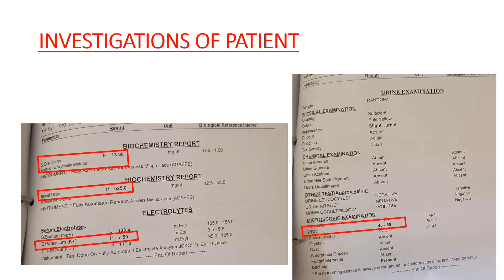These are the investigation reports of our patient: serum creatinine is 13 (normal is less than 1.5); blood urea level is 525, which is extremely high (normal value is 12 to 42); serum potassium level is 7.5, indicating dangerous hyperkalemia which requires urgent dialysis. On urine routine microscopy, we found hematuria with RBC count of 45 to 50 (normally zero in a healthy patient).